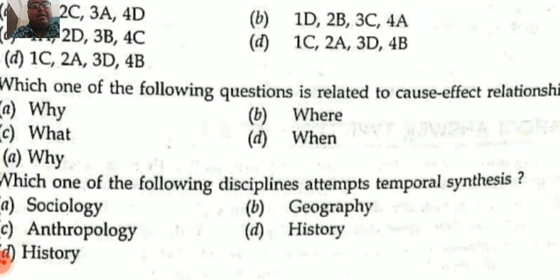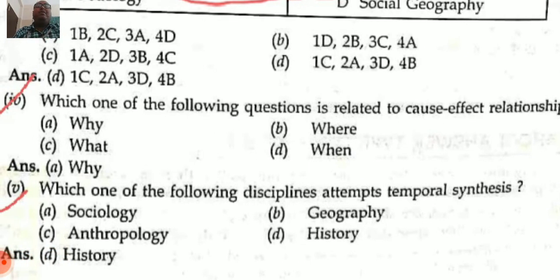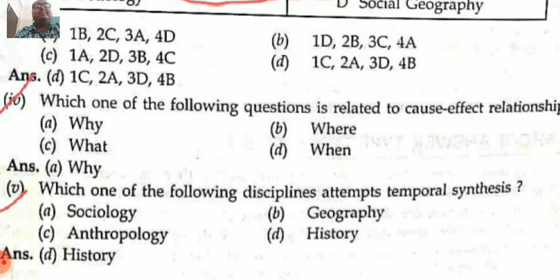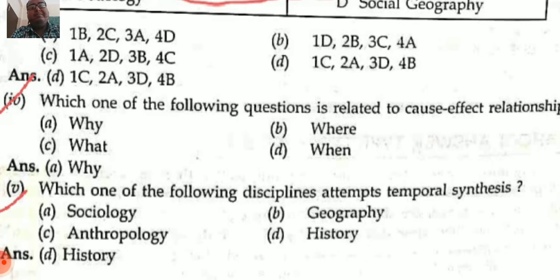Which of the following questions is related to cause-effect relationship? Whenever we discuss cause and effect, we always raise the question 'Why.' Next question: in which discipline is temporal synthesis attempted? Temporal means time. The answer is History — history deals with the timeline concept, using BC, AD, BCE, and similar terms.